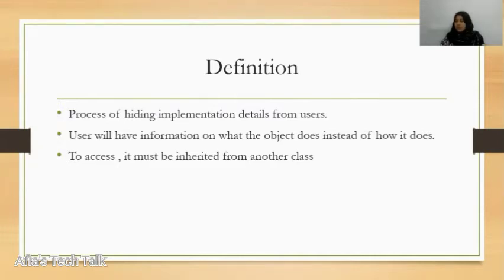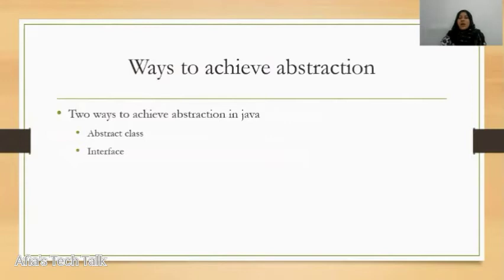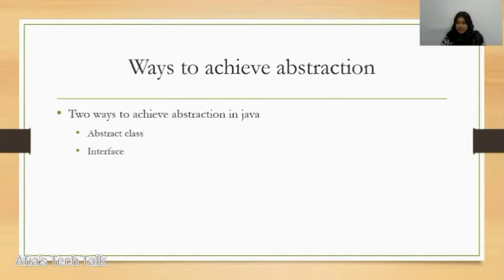So, the ways to achieve abstraction — how can we achieve this abstraction? There are two ways to achieve abstraction in Java: one is abstract class, the other is interface. Abstraction is the process of hiding the implementation details from the user.